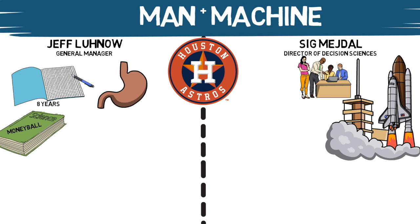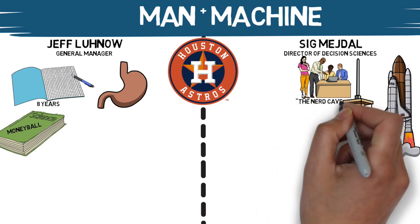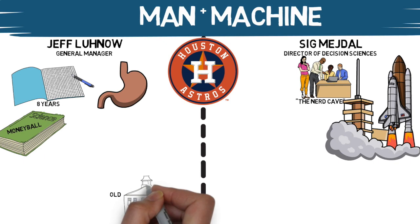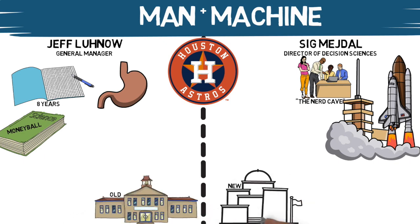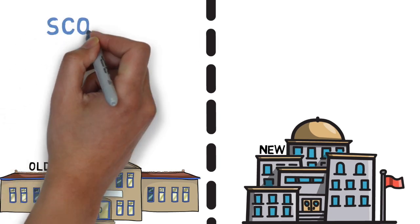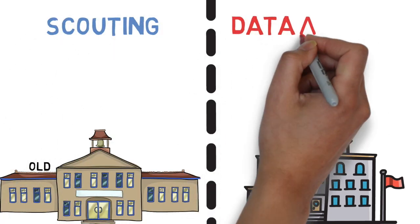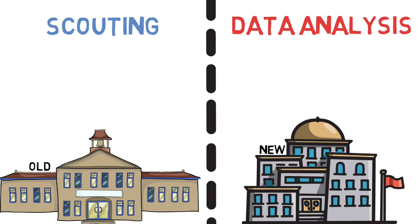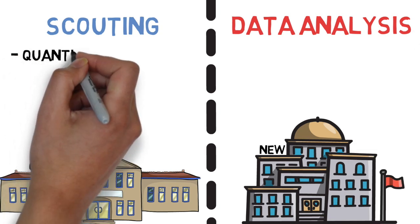With the Astros, he created what they refer to in the book as the Nerd Cave. This idea of old school versus new school isn't the way to go. The gut feeling versus the cold hard data, and that's what the Astros did so differently. The old school approach on scouting wasn't wrong. It just needed improvements. So that's what the Astros did.